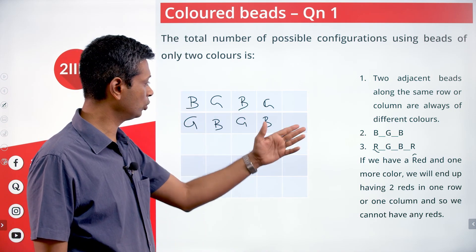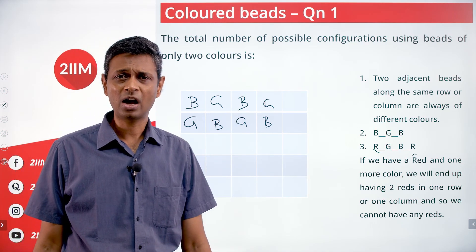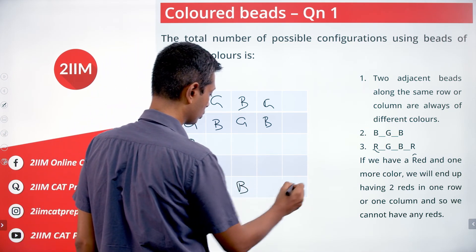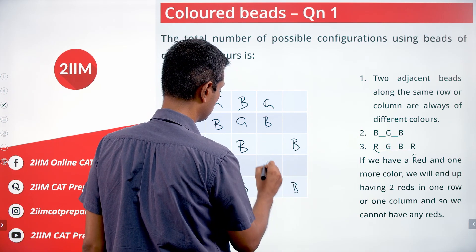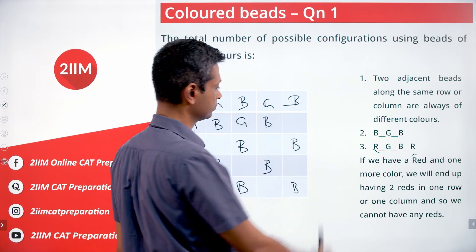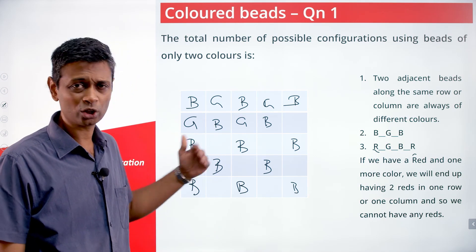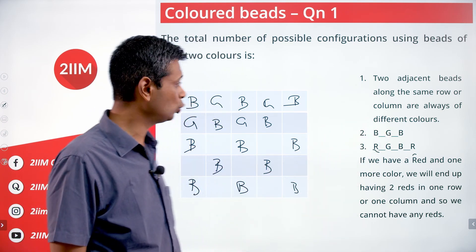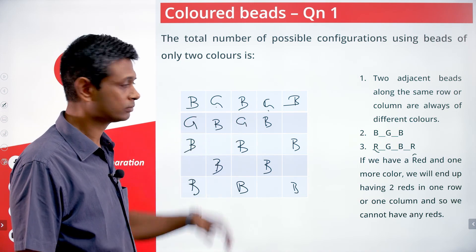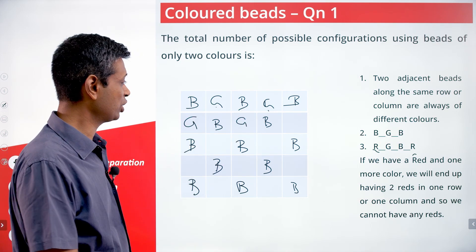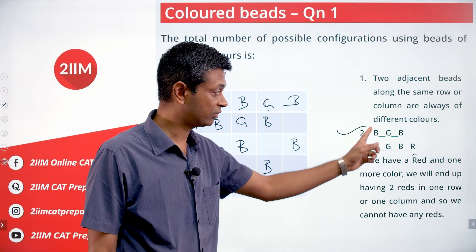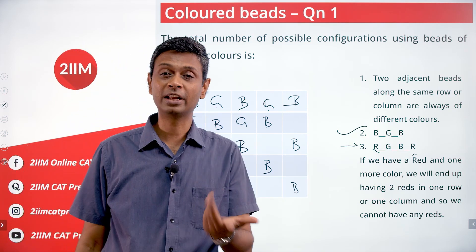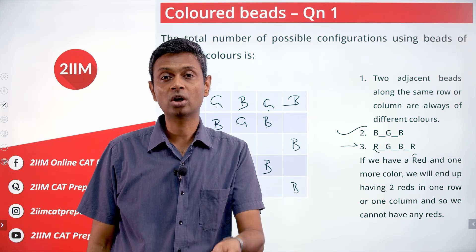So the alternating pattern goes blue, green, blue, green, blue across rows and down columns. This gives either 13 blues and 12 greens, or 13 greens and 12 blues. The condition that two blues need a green in between is automatically satisfied by the alternating pattern. So there are exactly two configurations possible — one starting with blue on the corners and one starting with green on the corners.